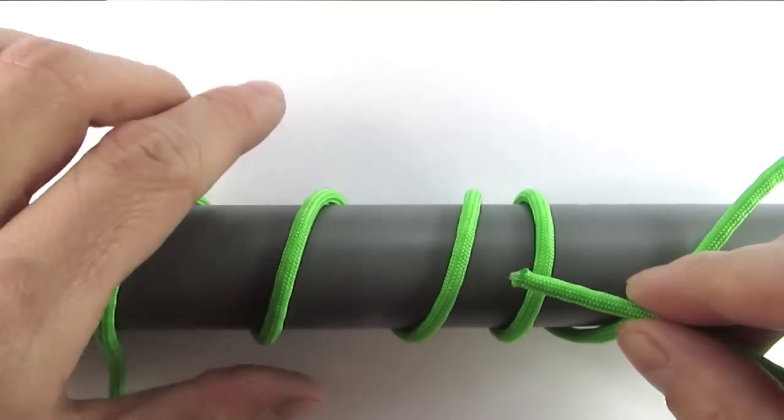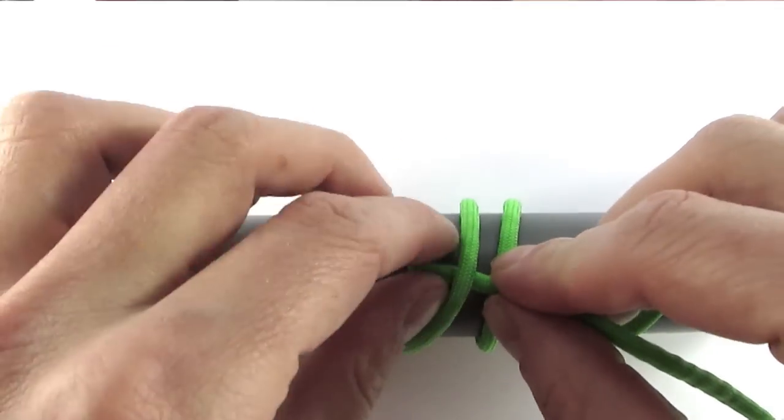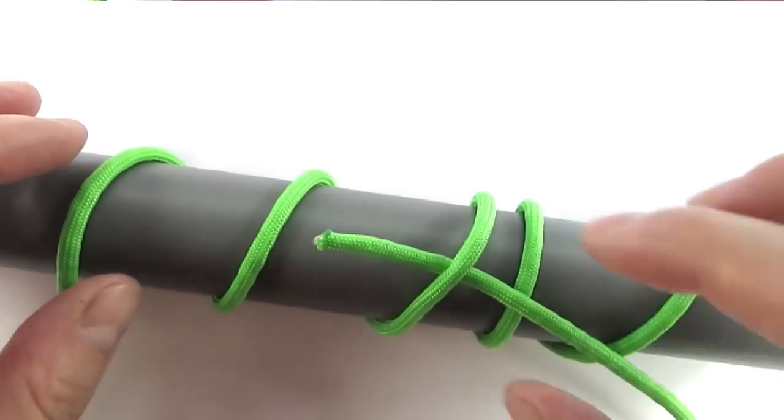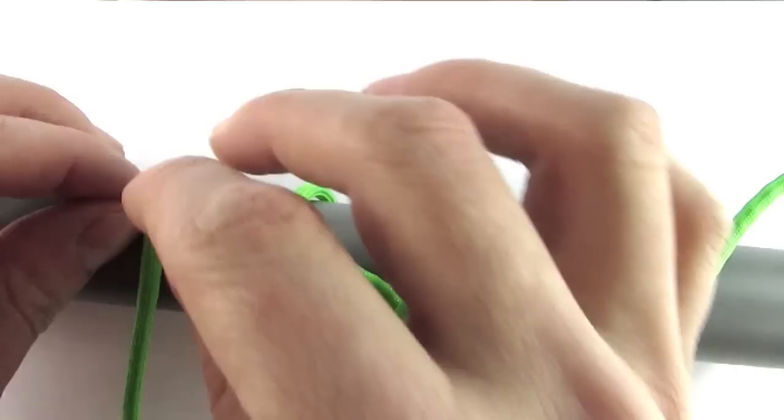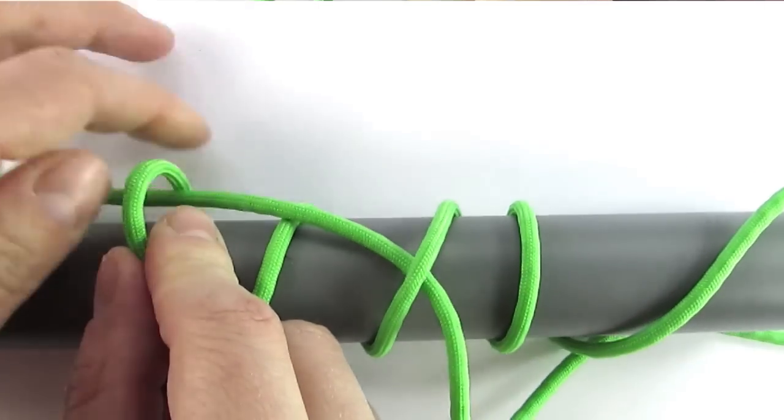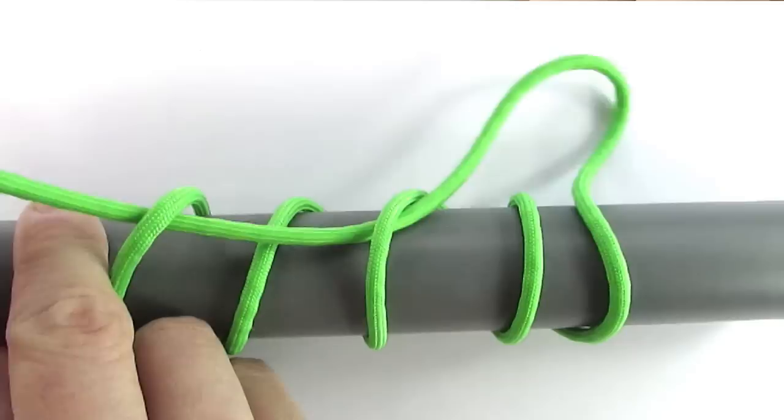We're going to take the right hand and go over, under, over, under until we reach the left side. Then just pull the cord through to the left.